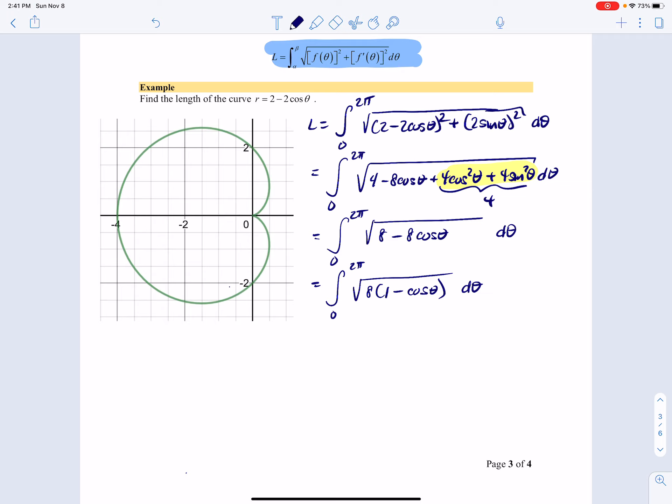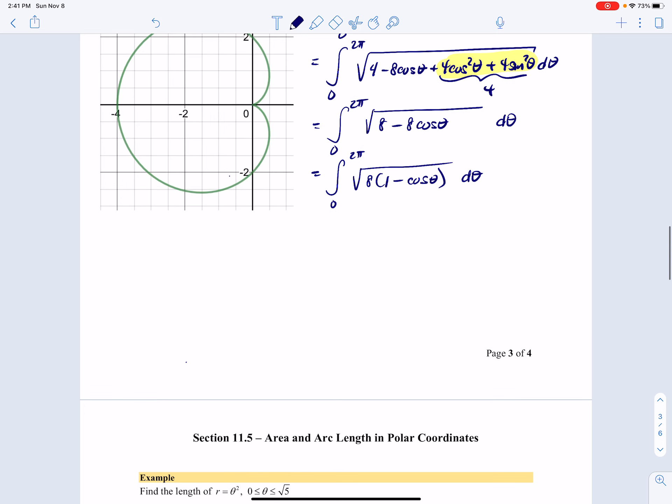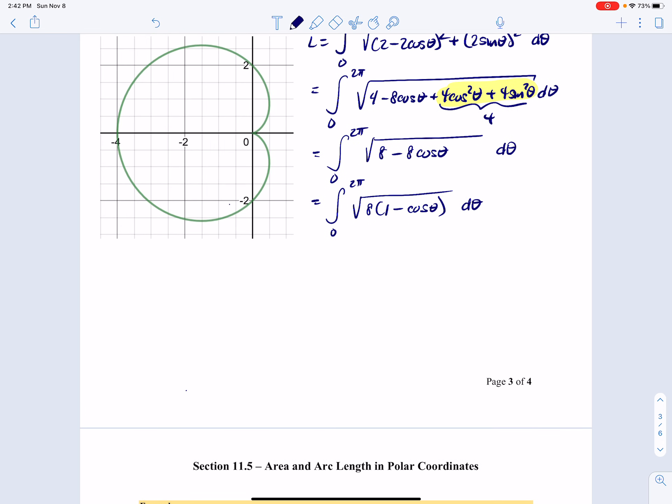So where do I go from here? Well, there is an identity that we can use from the past. So looking for identities where we have 1 minus cosine theta under a radical, turns out we have sine of theta over 2 is equal to the square root of 1 minus cosine theta all divided by 2.